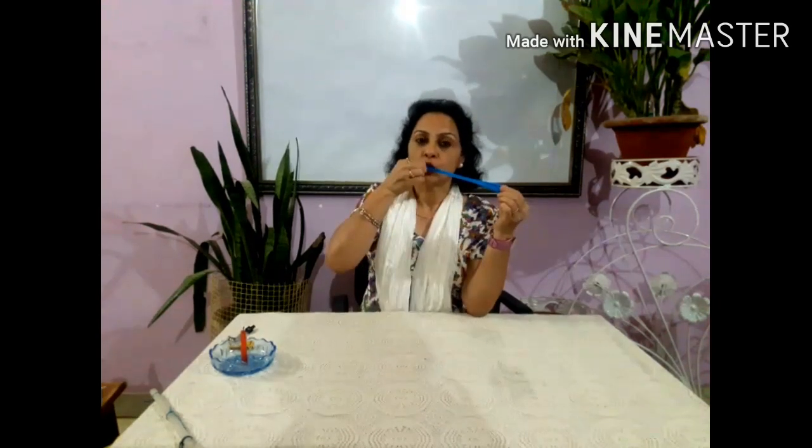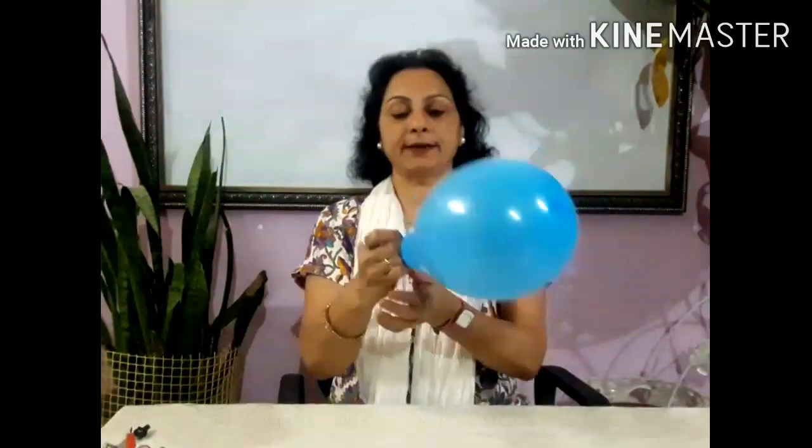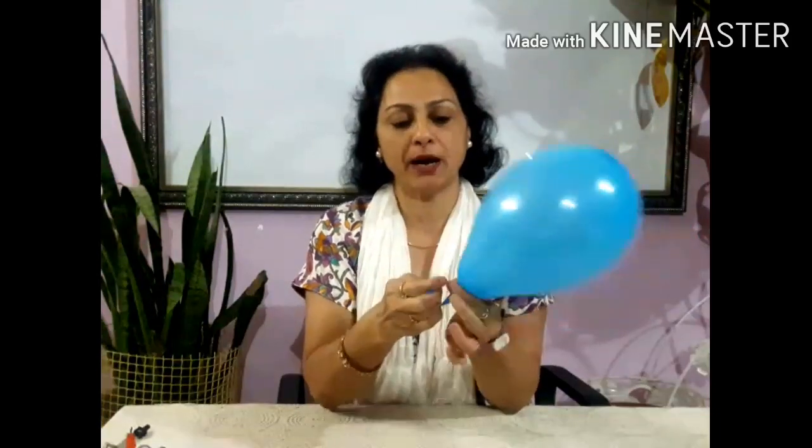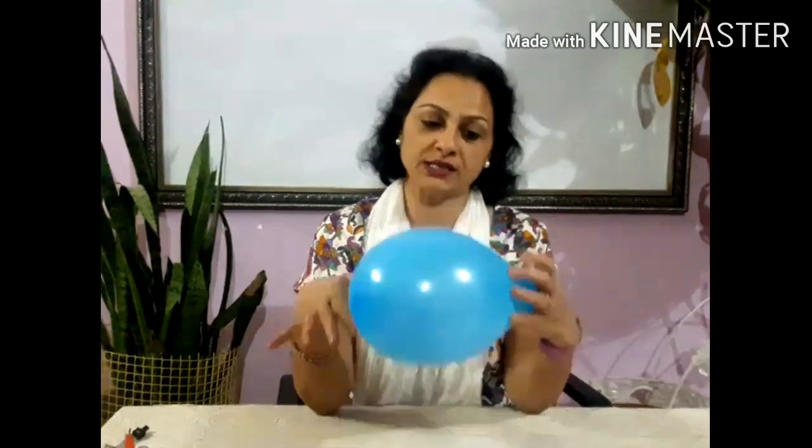The first property is that air occupies space. When we exhale, we are throwing out air. Now if I blow that air into this balloon, let's see what happens. I blew so much air out of my mouth and all that filled up this balloon. It means that the air occupied the space available in this balloon. So this activity proves that air occupies space.